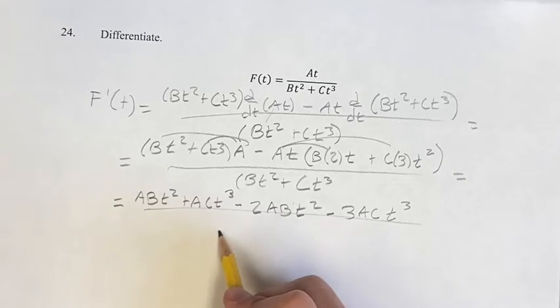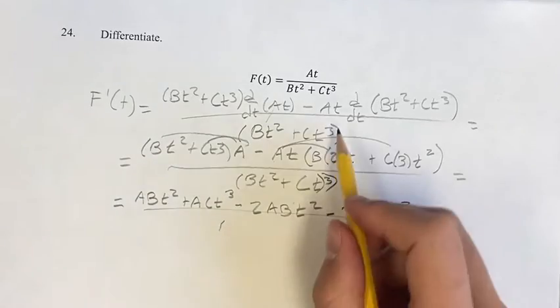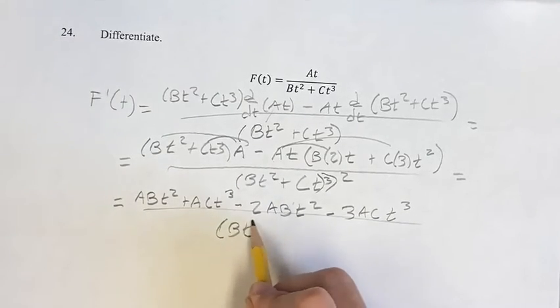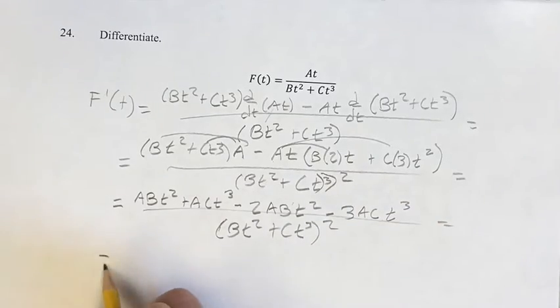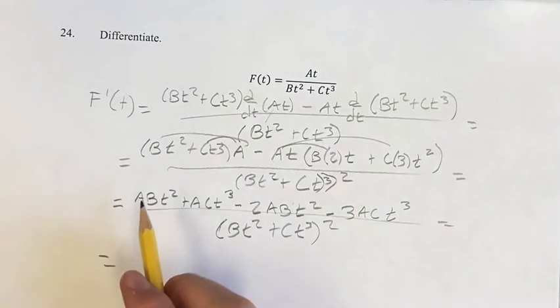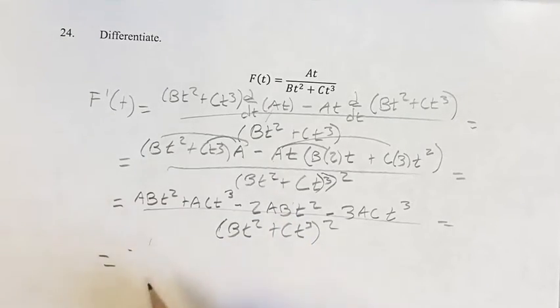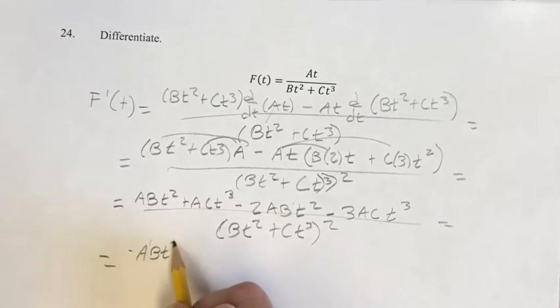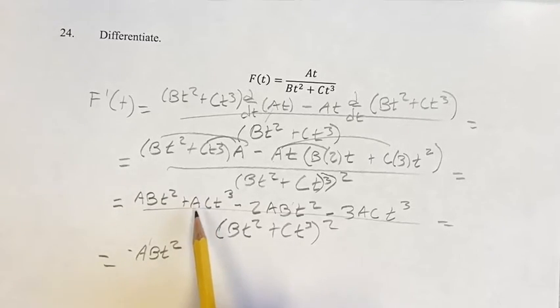So simplifying this, also making sure the denominator is still the same: Bt squared plus Ct cubed, squared. We get ABt squared minus 2ABt squared, which is negative ABt squared, plus ACt cubed minus 3ACt cubed, which is negative 2ACt cubed.